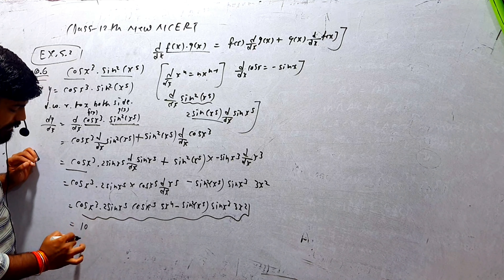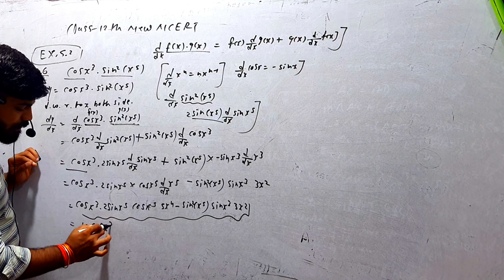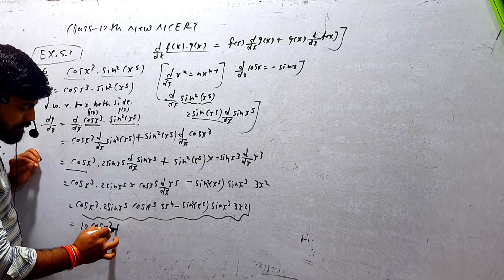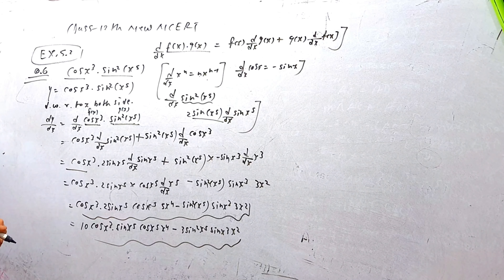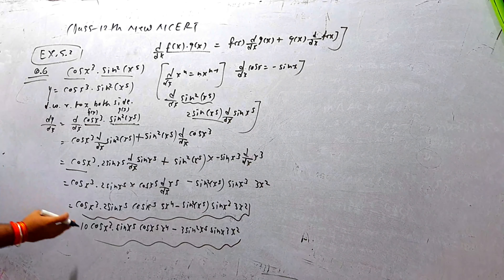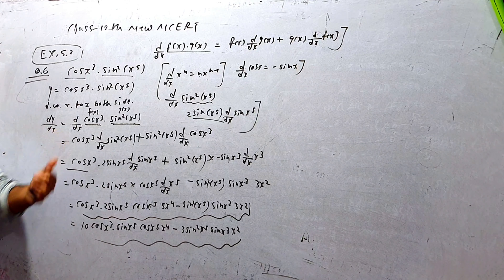यह 2 और यह 5, 5×2=10। Final answer: 10·cos(x³)·sin(x⁵)·cos(x⁵)·x⁴ minus 3·sin²(x⁵)·sin(x³)·x²। Check करो — आगे-पीछे होगा बाकी ठीक है। यह हमने 2 और 5 का multiply किया, इसीलिए 10 आया।